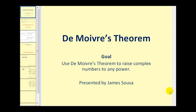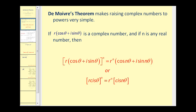Welcome to a lesson on De Moivre's theorem. The goal is to use De Moivre's theorem to raise complex numbers to any power. De Moivre's theorem makes raising complex numbers to powers very simple. If r times the quantity cosine theta plus i sine theta is a complex number, and if n is any real number, then if we take this complex number and raise it to the power of n, it equals r to the power of n times the quantity cosine n theta plus i sine n theta.